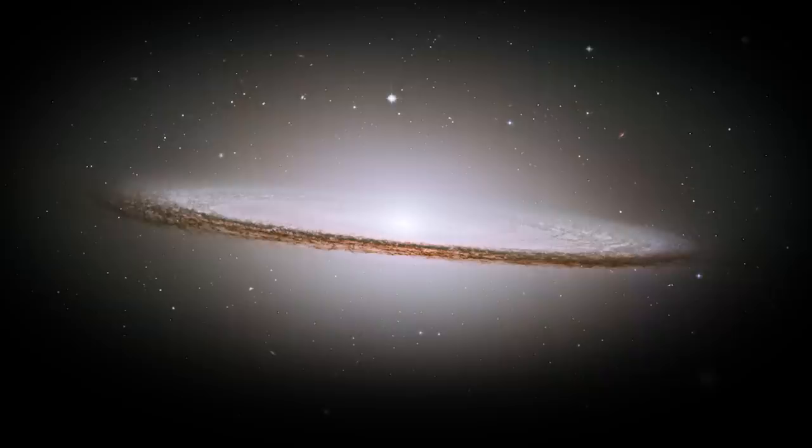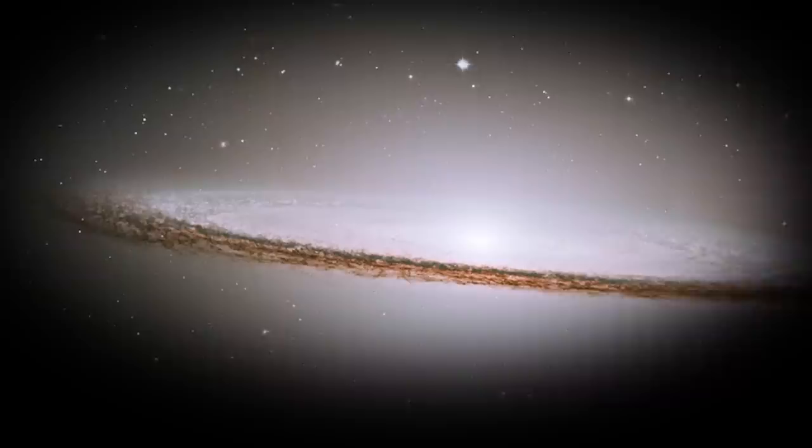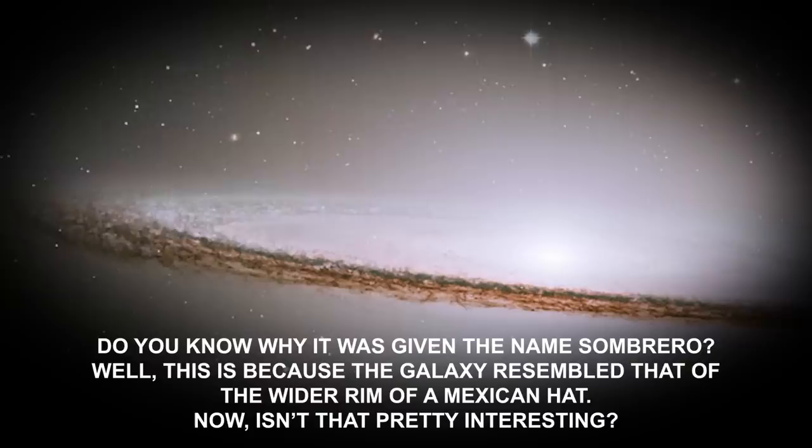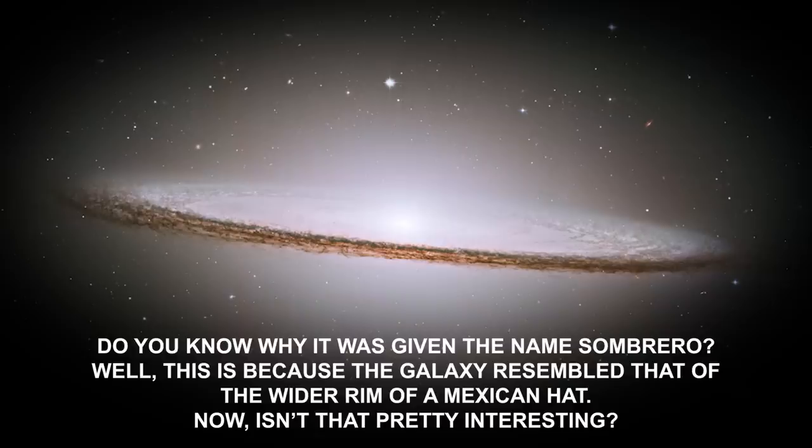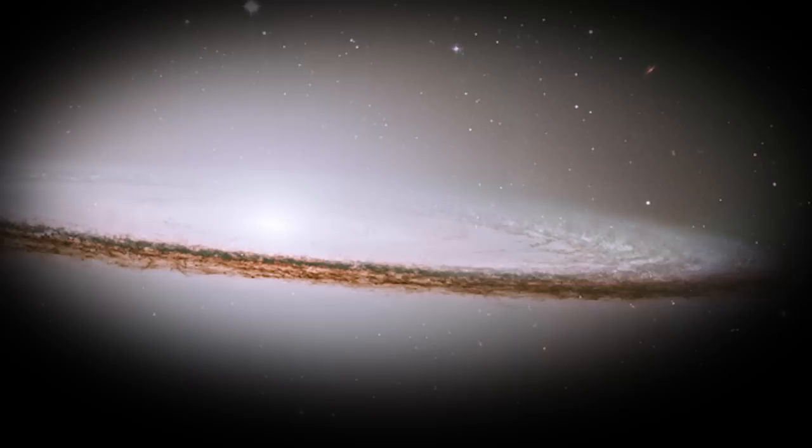Number 2: The Grand Sombrero Galaxy. This picture features one of the most photogenic galaxies in the universe, the Sombrero Galaxy. The sharp white galaxy is surrounded by brown dusty pathways, thus adding to the beauty of its great spiral structure. Do you know why it was given the name Sombrero? Well, this is because the galaxy resembled that of the wider rim of a Mexican hat. Now that's pretty interesting. How shocked will you be to know that the Sombrero is equivalent to 800 billion times the sun? It's located at the southern fringe of the Virgo Galaxy Cluster. Located at a distance of 30 million light-years from Earth, the picture of this fascinating galaxy has aided the astronomers in unraveling important information about the galaxy in general.